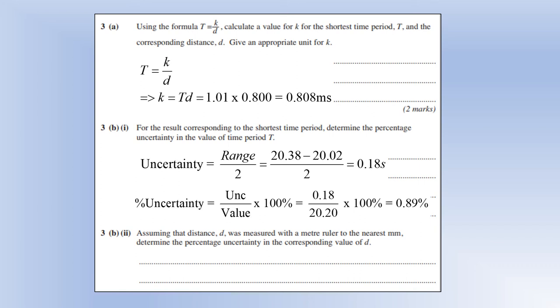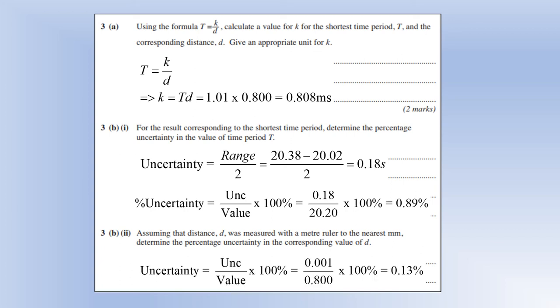Assuming distance d was measured with a meter ruler to the nearest millimeter, determine the percentage uncertainty in the value of d. So one measurement with a meter ruler has an uncertainty of half a millimeter, but to measure a length we need two measurements, so the uncertainty is going to be one millimeter when we double it. So that's what we're going to do. One millimeter divided by the value gives us 0.13%.